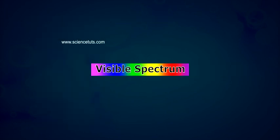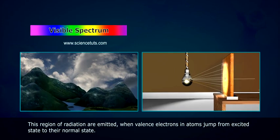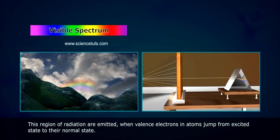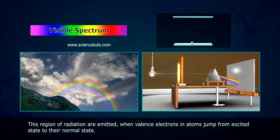Visible spectrum. This region of radiation is emitted when valence electrons in atoms jump from excited state to the normal state.